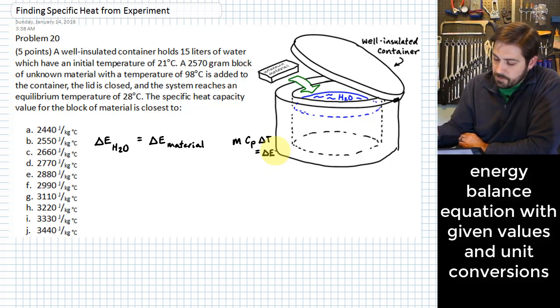Alright, so first we'll work with the water. We have 15 liters of water. 15 liters is not actually a mass unit just yet, so I am going to take that 15 liters and multiply by the density of water, and one of the statements of density of water is 1 kilogram per liter, and that gets me to mass for the water.